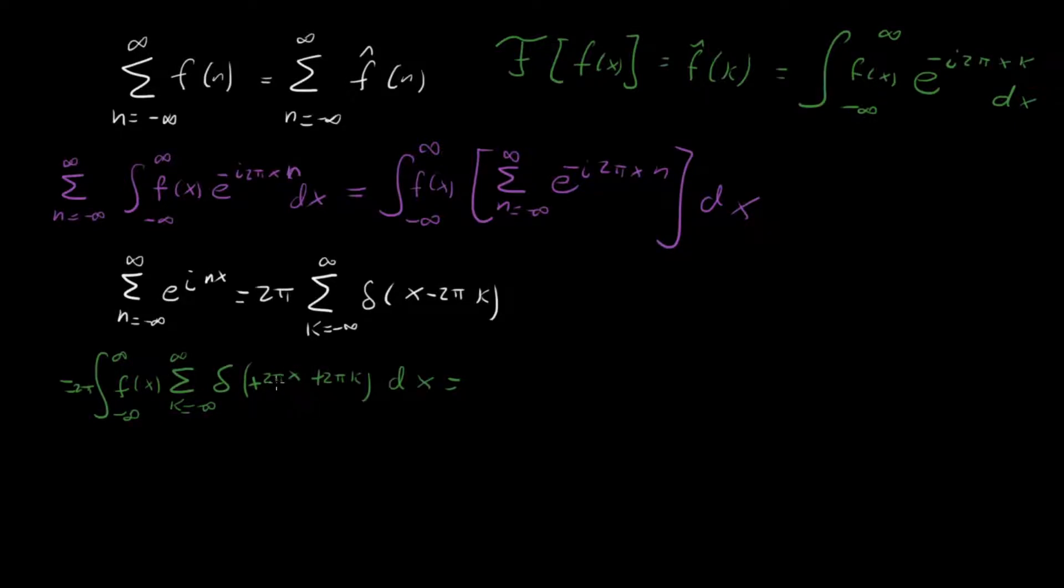And also, this is of the form of some constant times the argument, so constant times x plus k. And so we can pull out a 1 over 2 pi because we have this 2 pi times everything.